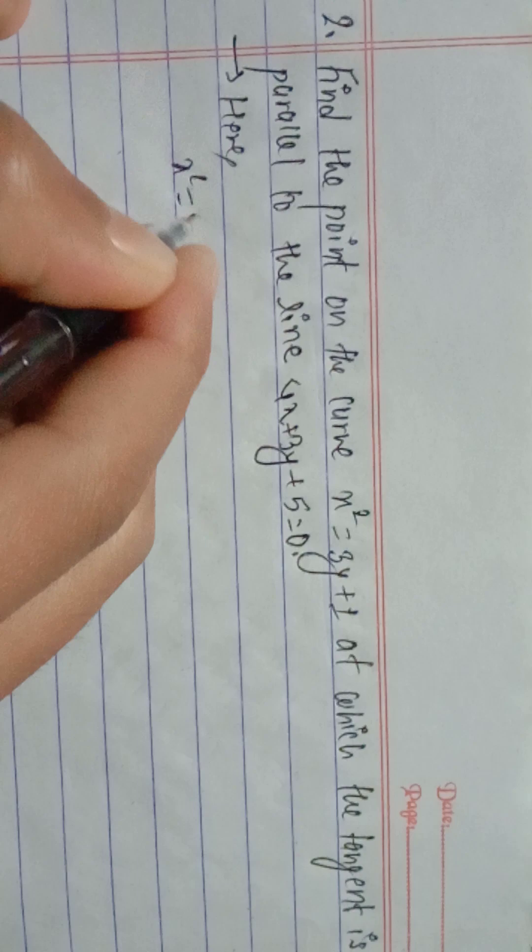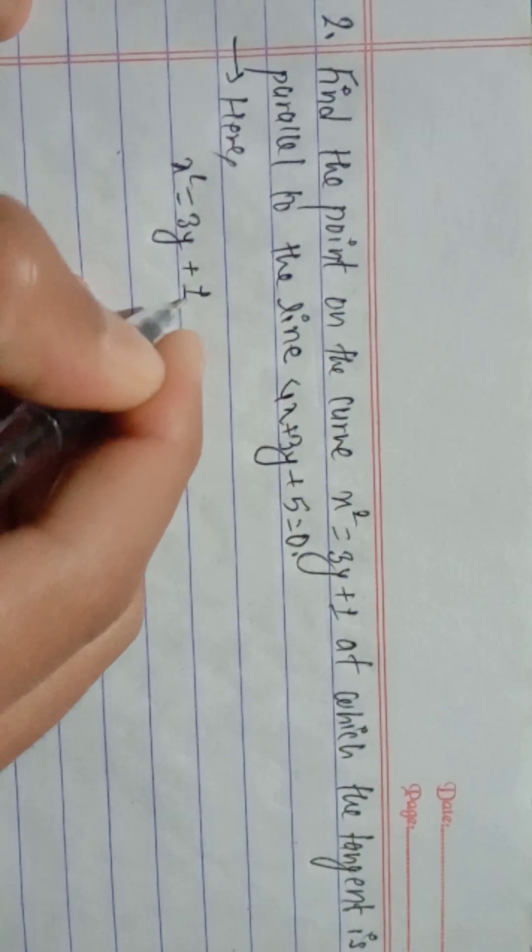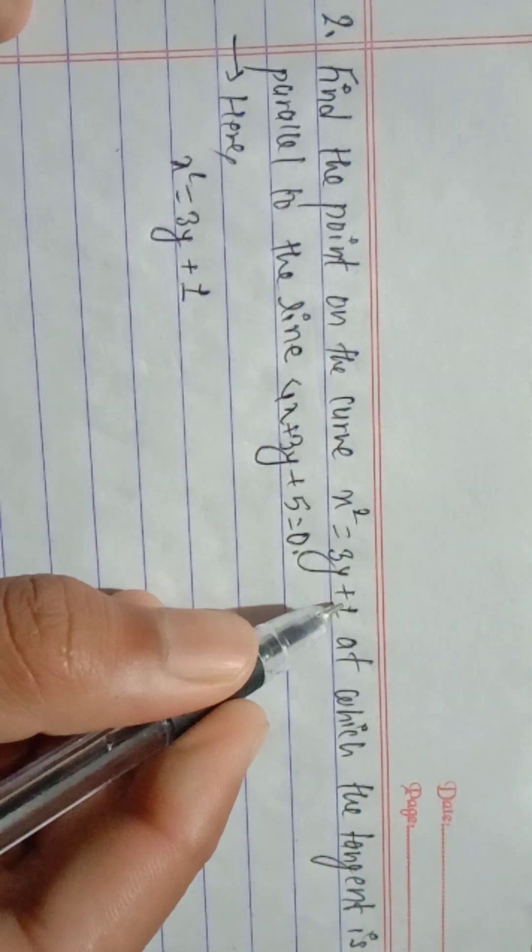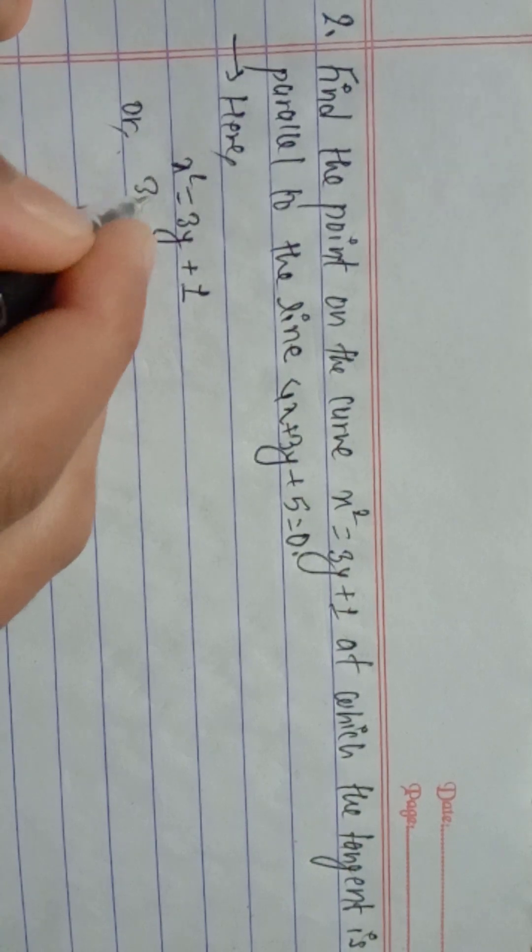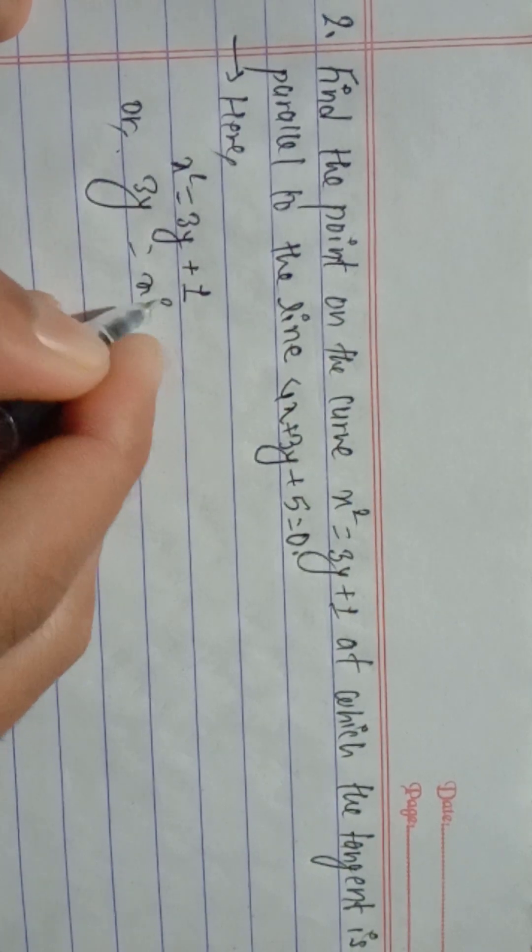Here, x square equals 3y plus 1. So, 3y equals x square minus 1.